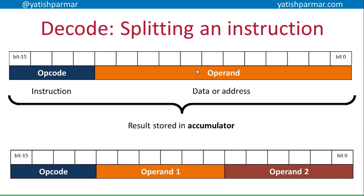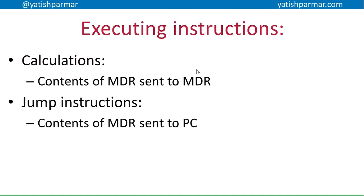I suggest you rewind and watch the part explaining how the fetch, decode, and execute cycle works. When instructions are executed, the contents of the memory data register are sent to the accumulator. However, when there's a jump instruction, the contents of the memory data register are sent to the program counter, because the program counter needs to know where the next instruction is located. This means the program counter can actually change more than once in a single clock cycle — it's incremented to point at the next instruction originally, then the instruction being interpreted says you need to go somewhere else, so the program counter is updated a second time in the same clock cycle.